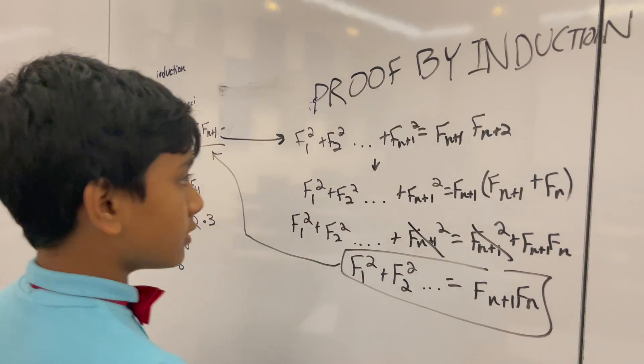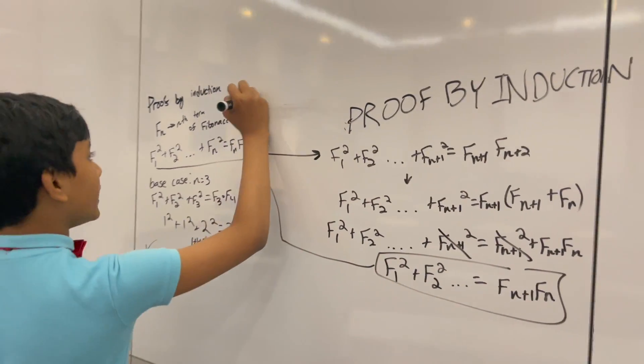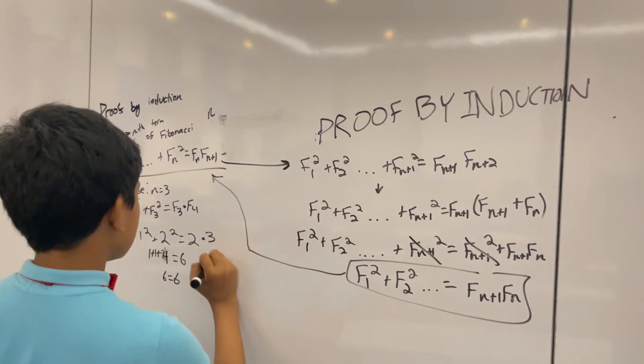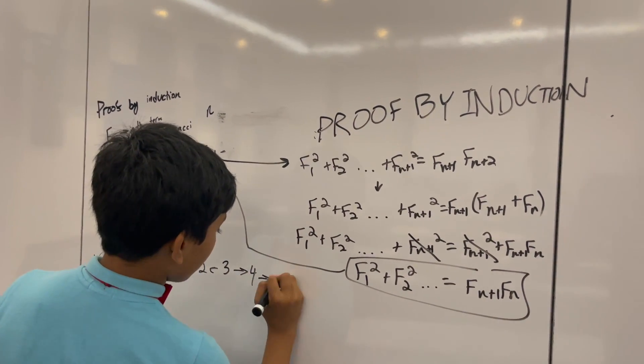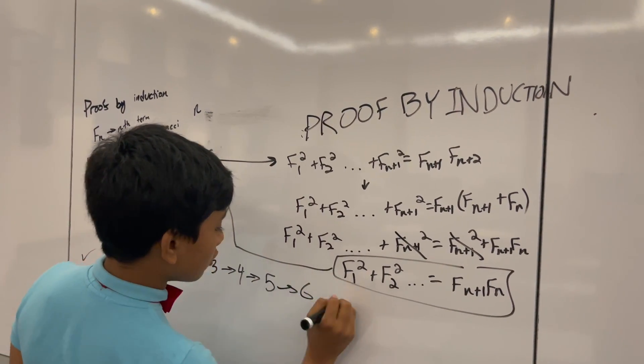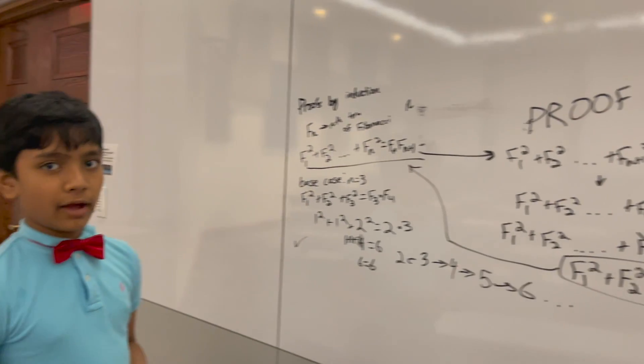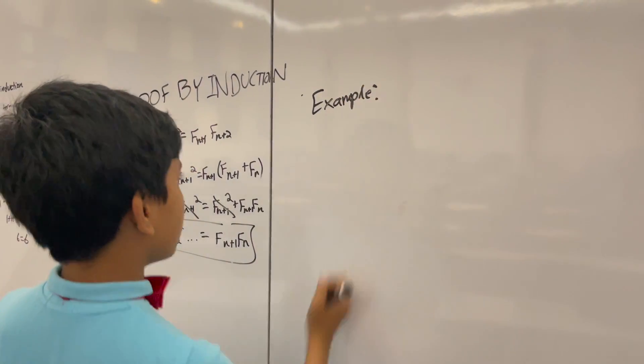That means that if it works for n, it works for n plus 1. If it works for 3, it works for 2. If it works for 3, it works for 4, 5, 6, and so on. We can prove that this is true for every value of n.